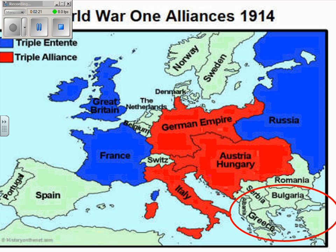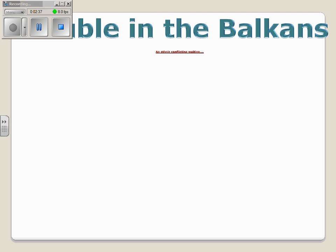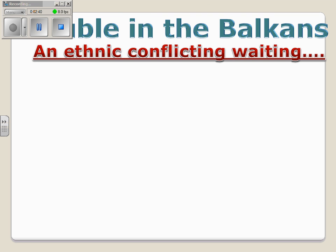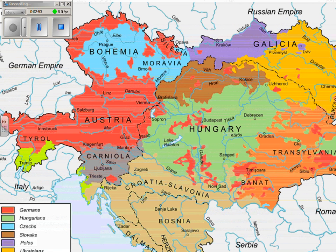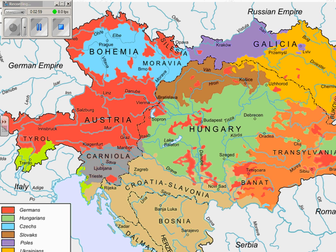Moving forward, we're going to talk about the Balkan Peninsula — and here's another map showing the alliance system: Great Britain, France, Russia versus Germany, Austria-Hungary, and Italy. The Balkan Peninsula was a conflict just waiting to happen. It's right across from Italy and is made up of several hundred different ethnic groups — Germans, Hungarians, Czechs, Slovaks, Poles, and Ukrainians. Because of nationalism, all these ethnic groups want their own country and their own land.